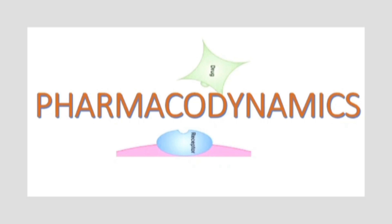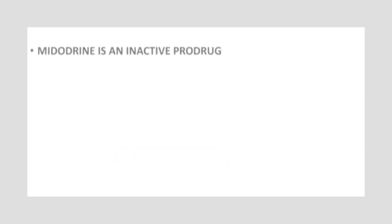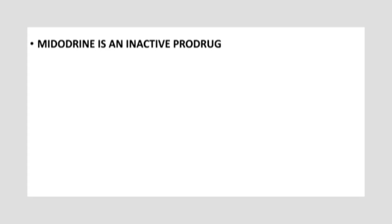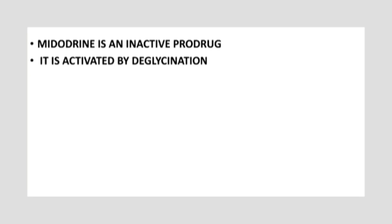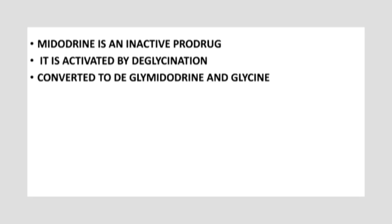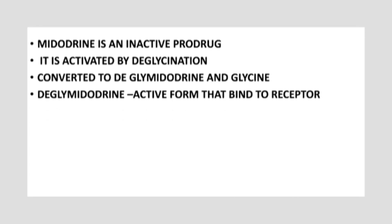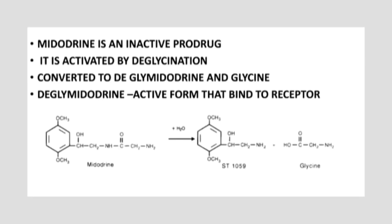Let's dive into the pharmacodynamics of midodrine. As previously discussed, it is a prodrug, so after absorption it must be converted to its active form before performing its action. It is activated by deglycination — the removal of glycine from midodrine. This is an enzymatic hydrolysis, meaning midodrine is broken down in the presence of water into desglymidodrine and glycine, an amino acid. The enzymes involved are still unknown. The active metabolite desglymidodrine then binds and stimulates alpha-1 receptors for its action.